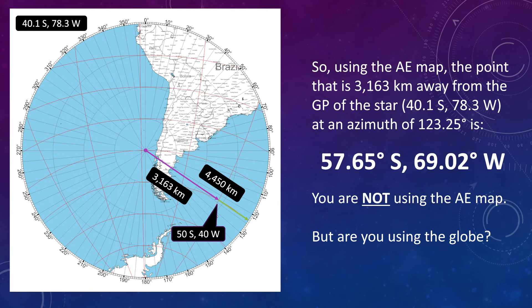So using the AE map, the point that is 3,163 kilometers away from the GP of the star at an azimuth of 123.25 is 57.65 degrees south, 69.02 degrees west. That is not what we were expecting. We were expecting 50 degrees south, 40 degrees west. This is not using the AE map. But is it using the globe? Let's check.